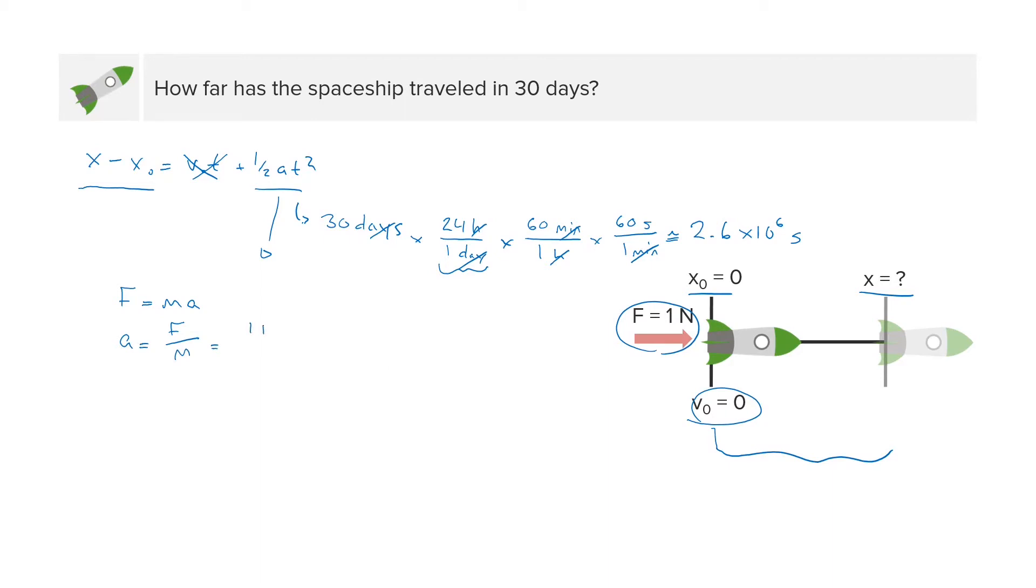In our case, our force is one Newton, and our mass is 1,000 kilograms. Remembering our units of Newtons, what we have is kilograms meters per second squared divided by kilograms. So this is equal to 1 divided by 1,000, which is 10 to the minus 3 using our scientific notation, meters per second squared, which are the units for acceleration.